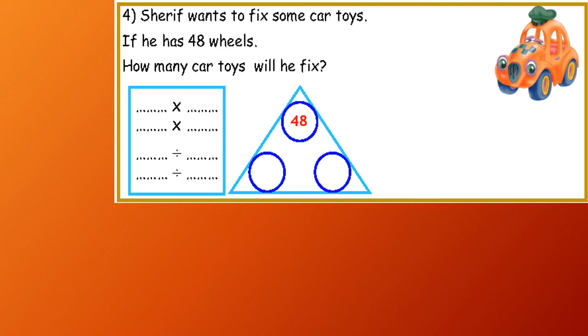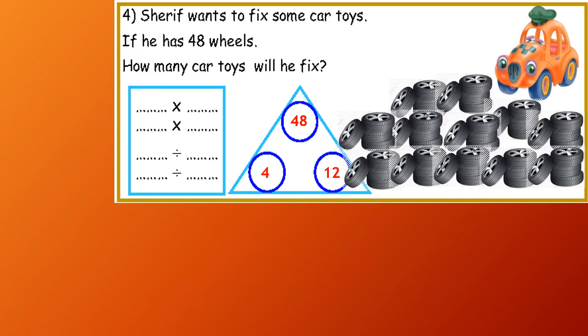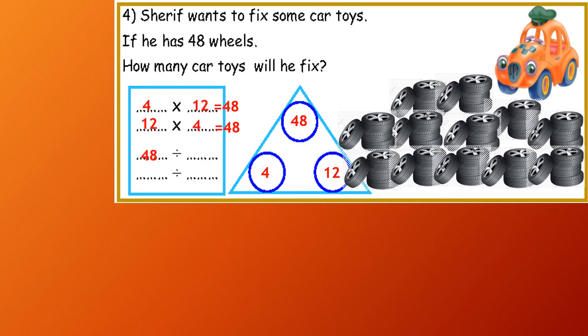So, 48 divided by 4 equals 12. Now, 4 by 12 equals 48, and 12 by 4 equals 48, 48 divided by 4 equals 12, and 48 divided by 12 equals 4.